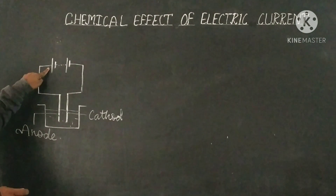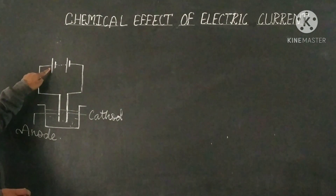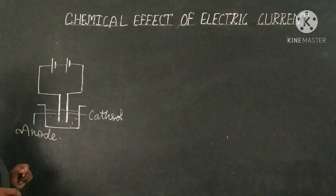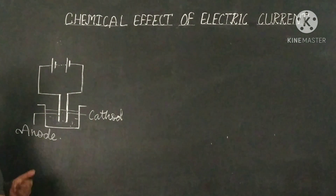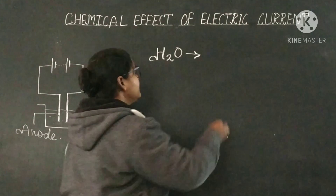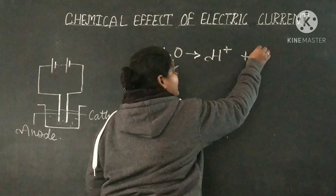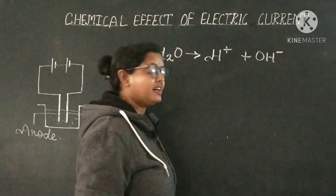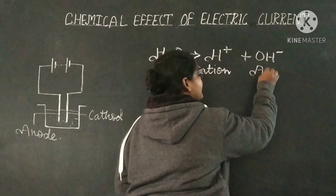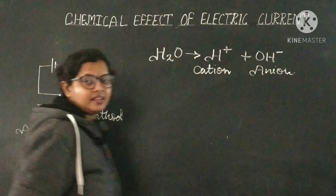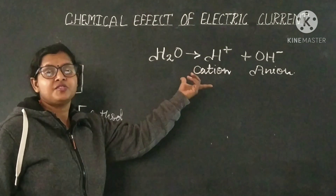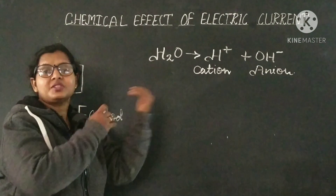After connecting the overall setup, current moves from the positive terminal of the battery through the wire, passes through the solution, and reaches the negative terminal. What happens inside this conducting solution? When electric current reaches the acidified water, water breaks into its ions: hydrogen ions and hydroxide ions. Hydrogen ions are the positively charged ions (cations), and hydroxide ions are the negatively charged ions (anions). Whenever these ions are formed, they move to their respective electrodes.